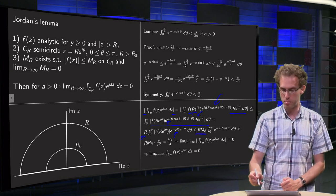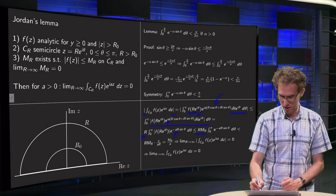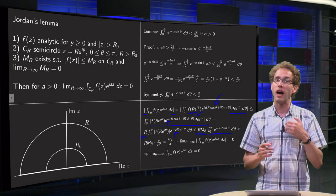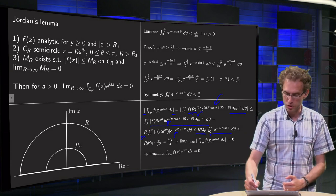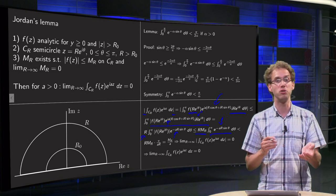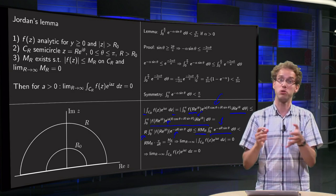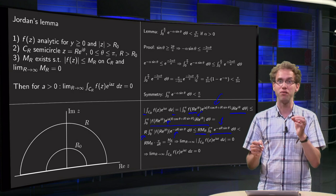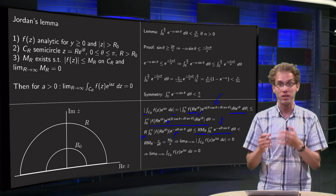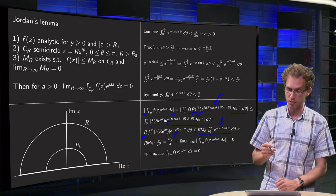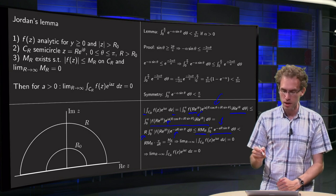Now we're left with a real integral. We know by assumption that f is bounded by some M_R, so you get your R times M_R times this integral. And now this additional factor is going to save us.